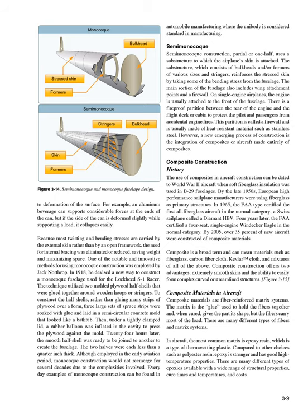However, a new emerging process of construction is the integration of composites or aircraft made entirely of composites. Composite Construction History. The use of composites in aircraft construction can be dated to World War II when soft fiberglass insulation was used in B-29 fuselages. By the late 1950s, European high-performance sailplane manufacturers were using fiberglass as primary structures. In 1965, the FAA type-certified the first all-fiberglass aircraft in the normal category, a Swiss sailplane called the Diamond HPV. Four years later, the FAA certified a four-seat, single-engine Windecker Eagle in the normal category. By 2005, over 35% of new aircraft were constructed of composite materials.